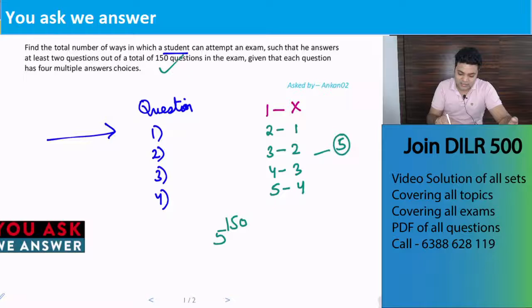Now the question has certain conditions. What are those conditions? That he has to answer at least two questions. So from the total cases we have to subtract those cases in which he didn't attempt even a single question. That is, for every question he picked this option. So how many such cases will there be? There will be only one way when he didn't attempt any question at all. So minus one. We did minus one for what? When he didn't attempt any question.